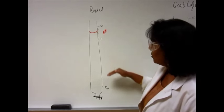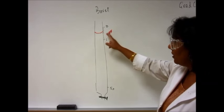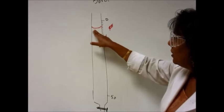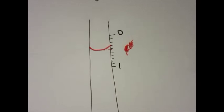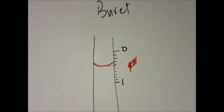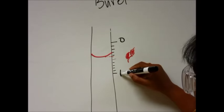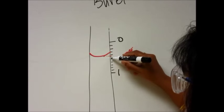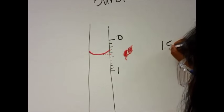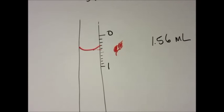For example, this reading that we have right now—and again, you have to read at eye level the meniscus of whatever liquid you have in there—anyone without knowledge of reading a burette can read this as 1.56 milliliters. But because you watched this video and know how to read a burette, you know you have to read top down.